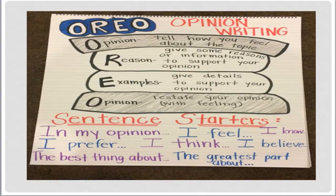The first letter O stands for the word opinion — you have to tell how you feel about the topic or about something you will talk about. R stands for reason, so we have to give some reasons or information to support your opinion. E stands for examples — you have to give details to support your opinion. The last letter O means you have to state your opinion with feeling.